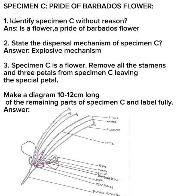Question three: Specimen C is a flower — remove all the stem and three petals from Specimen C, leaving the special petals, then make a diagram 10 to 12 centimeters long of the remaining parts and label fully. You can see the Pride of Barbados, the way the petals were removed, and how you can label it fully. Candidates, take note.